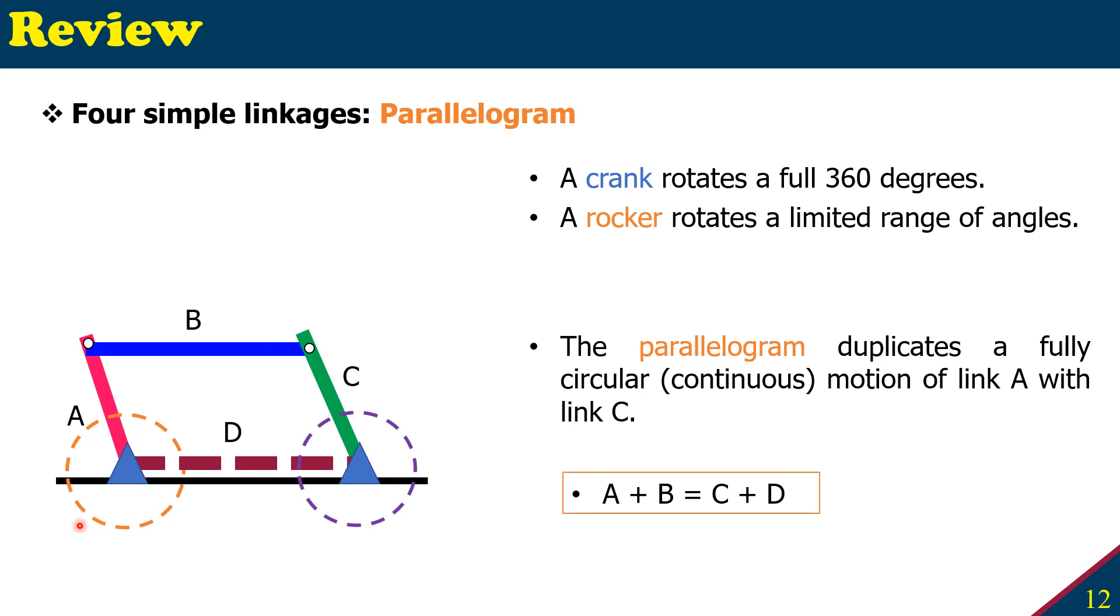And again, it is a continuous 360 degrees, and it just duplicates what's happening at A. The same scenario will be duplicated at C. For this to happen, the sum of the arms A and B will be equal to C and D, or you can say sum of C and D will be equal to sum of A and B.